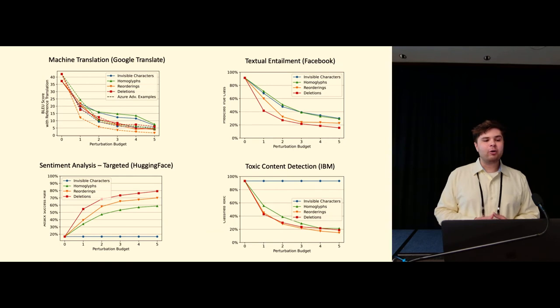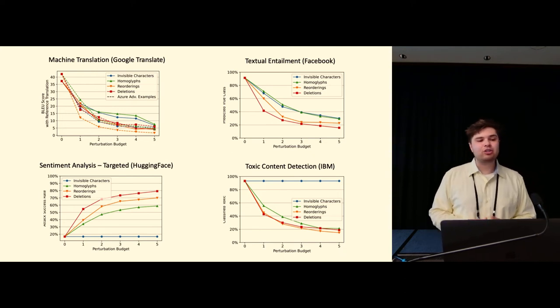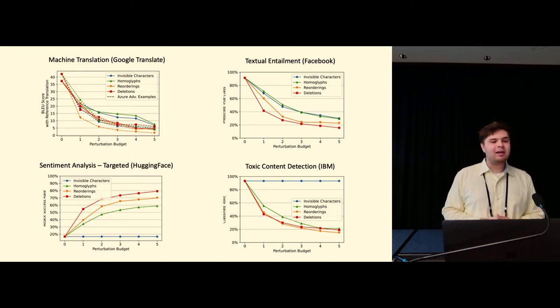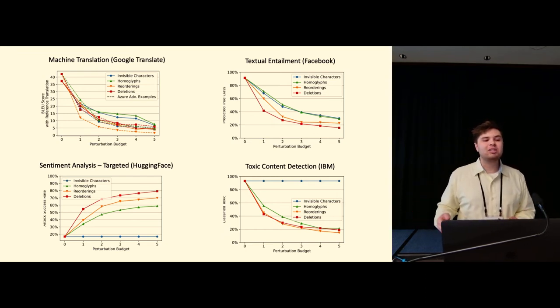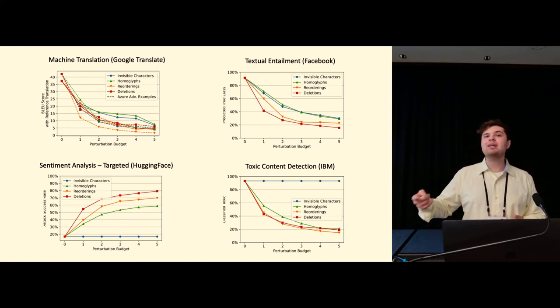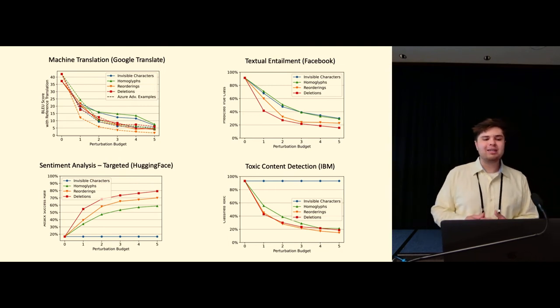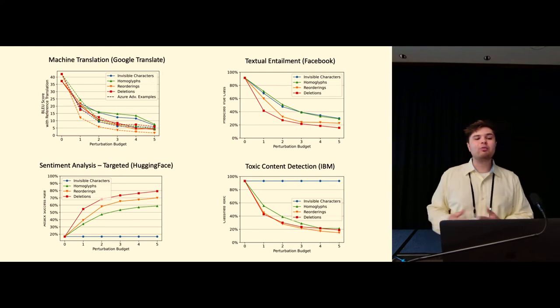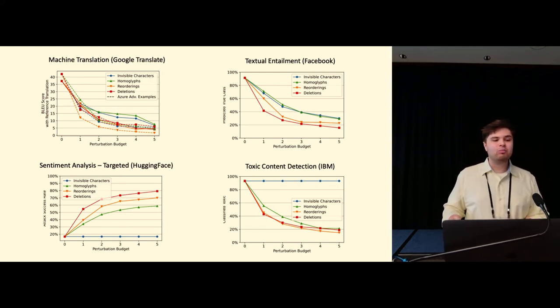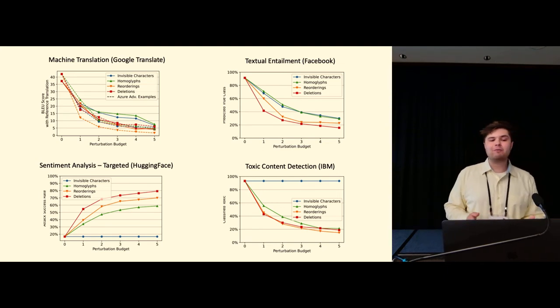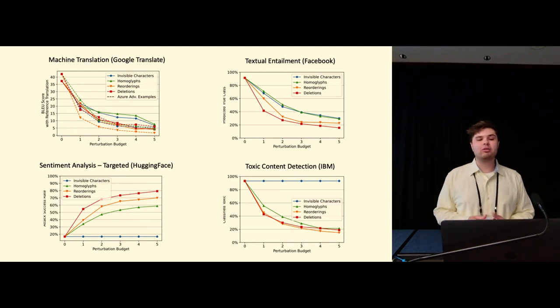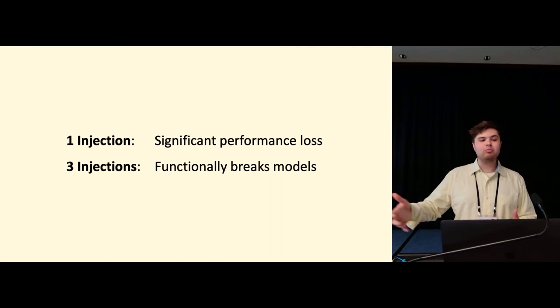And just as a mile-high overview, I'll throw up a few of the more technical results here. We'll look in the top left at Google Translate, in the top right at a textual entailment model produced by Facebook, in the bottom left at a sentiment analysis model that is just a common one published on Hugging Face, and in the bottom right at a toxic content detection model produced by IBM. And what's most important here is just the trends of all of these graphs. You'll see that as we increase our perturbation budget, which we're just defining as one injection or one usage of one of the four techniques that we described as a single perturbation budget, as we increase that, we notice the performance of these models decreases drastically.